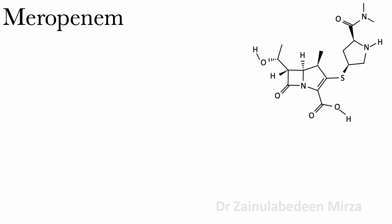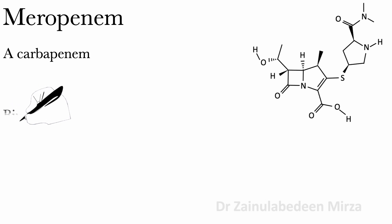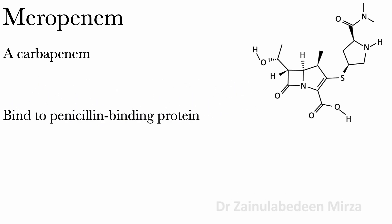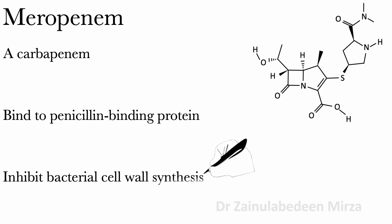Meropenem is a carbapenem that binds to penicillin-binding proteins and inhibits bacterial cell wall synthesis. Meropenem is active against most gram-positive and gram-negative bacteria, including E. coli, Pseudomonas aeruginosa, and methicillin-sensitive Staphylococcus aureus. Meropenem produces bacterial cell death in most susceptible organisms.